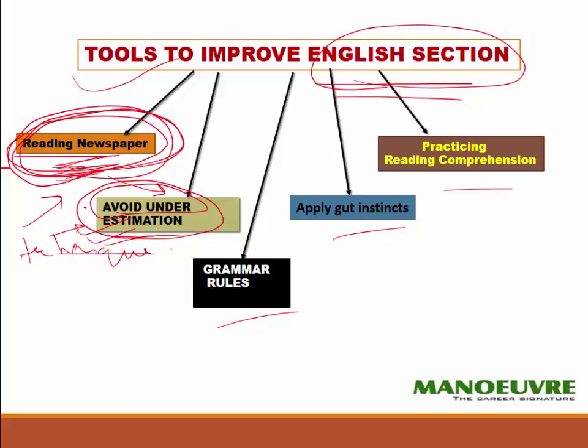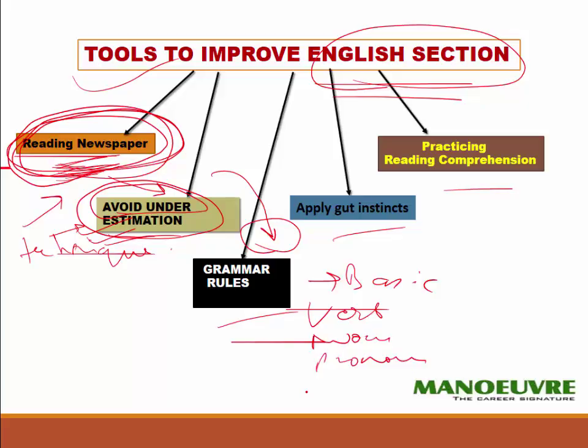The next tool is grammar rules. If you are aware of your basic grammar rules — what is a verb, what is a noun, what is a pronoun, what is an adverb, what is an adjective, how to write a paragraph, how to write an essay — these are the fundamentals you need to follow when solving any English exam. If you are thorough with the first, second, and third tools, you will easily be able to go ahead and give the exam no matter how tough the paper might be.